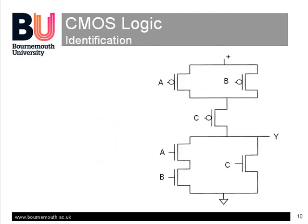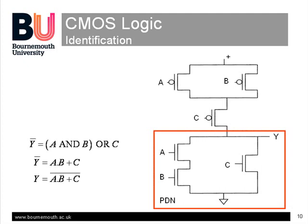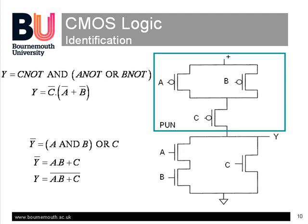This is a slightly more complicated example — part of Doctor Who's gerbil disintegrator maybe. Looking at the pull-down network first, we see the output will be 0 or NOT Y if C is 1, or if both A and B are 1. Inverting that expression we can obtain the function that Y equals NOT(A AND B OR C). Checking the pull-up network gives that Y is 1 if NOT C is 1 and either NOT A or NOT B are 1, and inverting that we get NOT Y as C OR A AND B, which inverts again to give the same function as the pull-down.